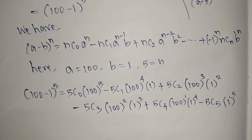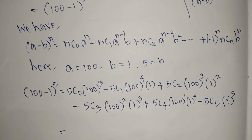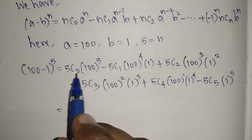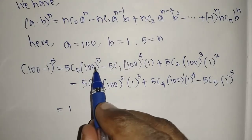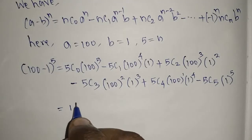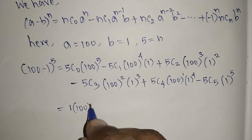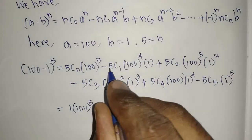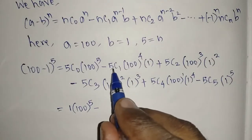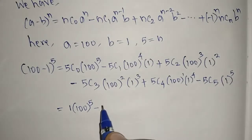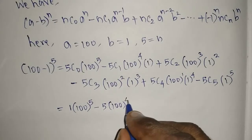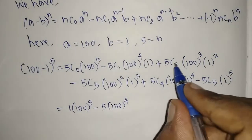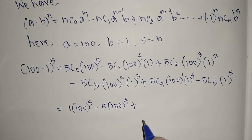Now we simplify. 5C0 equals 1, so we have 100^5. Then 5C1 equals 5, so minus 5 * 100^4. And 5C2 equals 10, so plus 10 * 100^3.